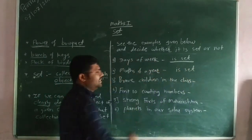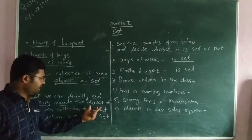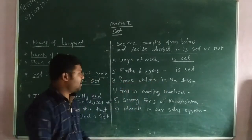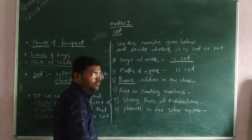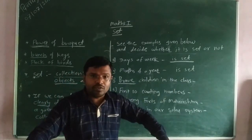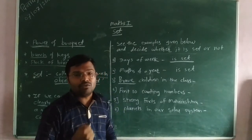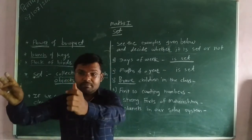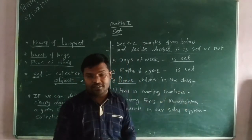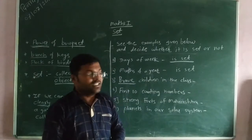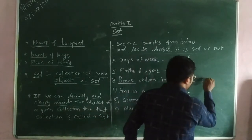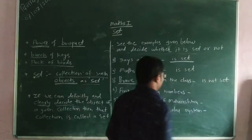Now looking at the second example: brave children in the class. Then brave — brave people, who is brave and who is not? This is not a clear definition of the objects. So 'brave children in the class' is not a set.